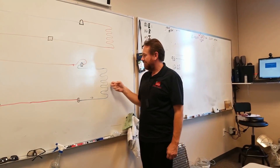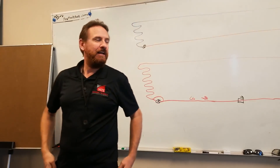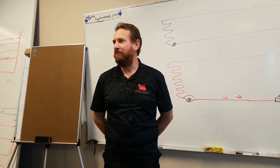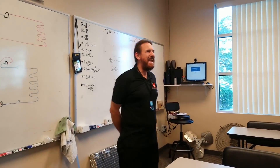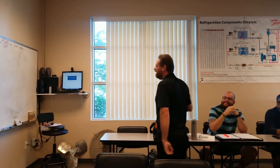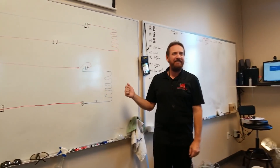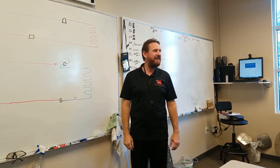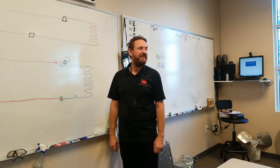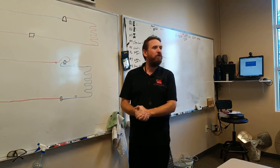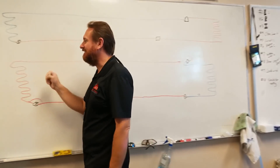A heat pump absorbs heat from outside and rejects heat to the air inside. As long as my saturation temperature is below the air temperature, I can absorb heat. People always say, isn't it cold outside — you can't absorb heat because it's cold outside. But you can, because there is heat all the way down to minus 460 degrees Fahrenheit. There is always heat — there is no cold. Even though the temperature outside drops below zero, there's still heat outside. At zero degrees Fahrenheit, there are still 460 degrees worth of heat. Now it gets more difficult to absorb it, more work, but there is still heat outside.